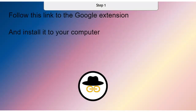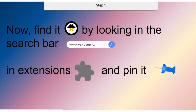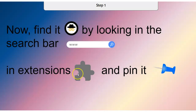You can follow the link to the Google extension by clicking the link and install it first to your computer. Once it's done, you're going to have to find Sir Links-a-Lot by looking for it in the search bar. You will find it in the extensions link, click on that link, and pin it to your search bar so you will be able to pull it up anytime that you need it.